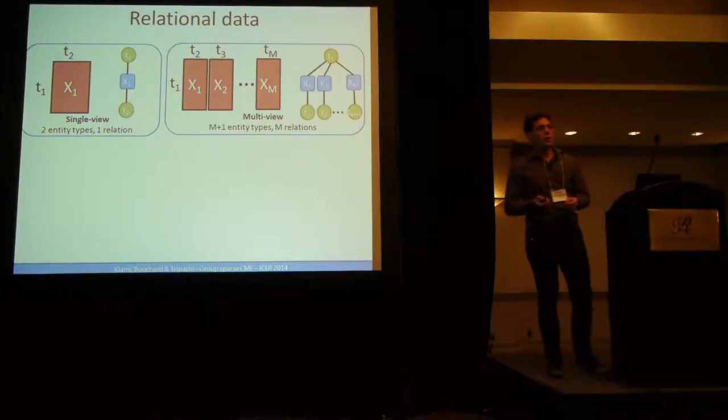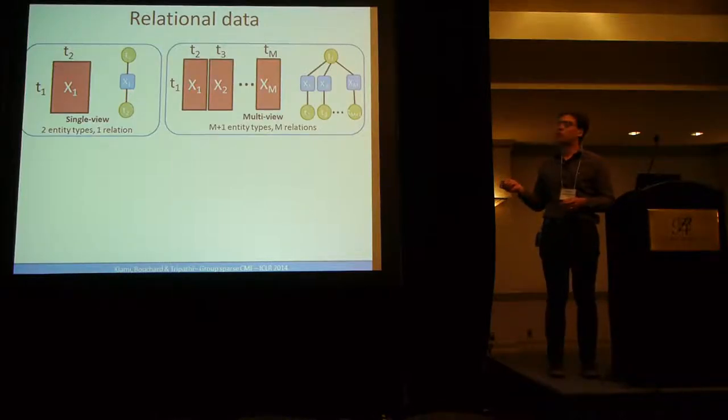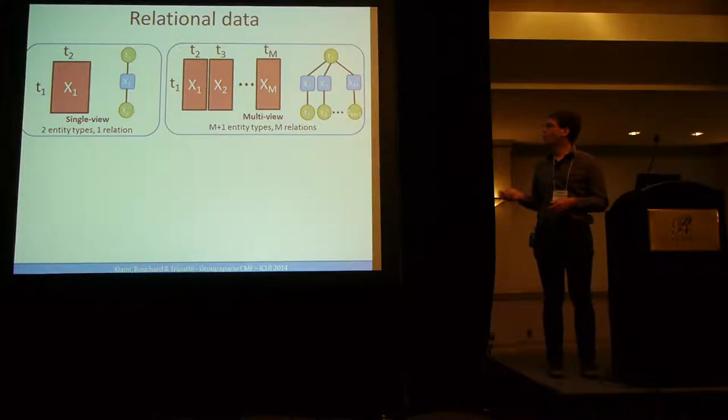In multi-view learning, you have several matrices concatenated together or equivalently, you have M plus one entity types. So if you have M views, you have M plus one entity types. So one entity type, T1, is connected somehow with plenty of features, for example.